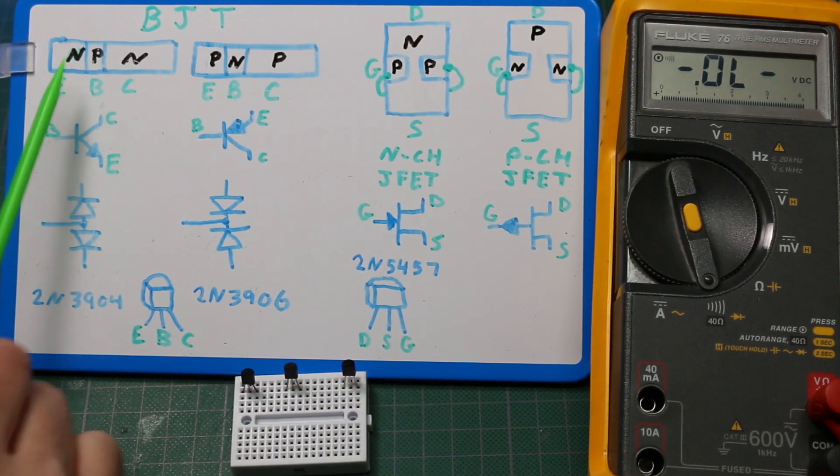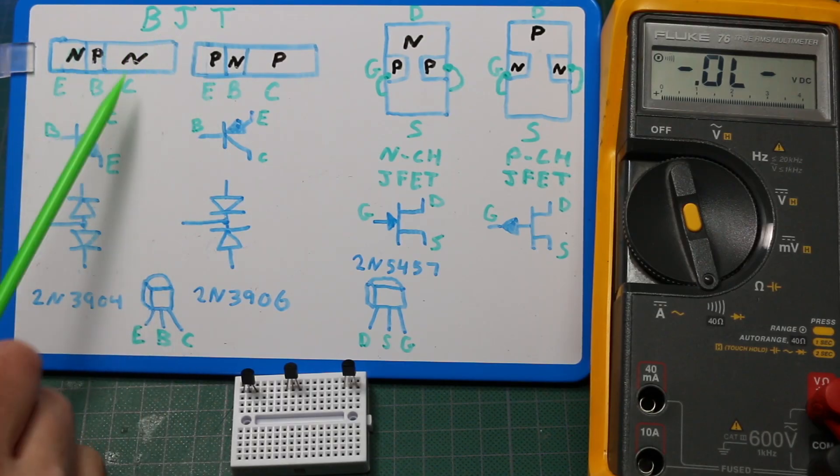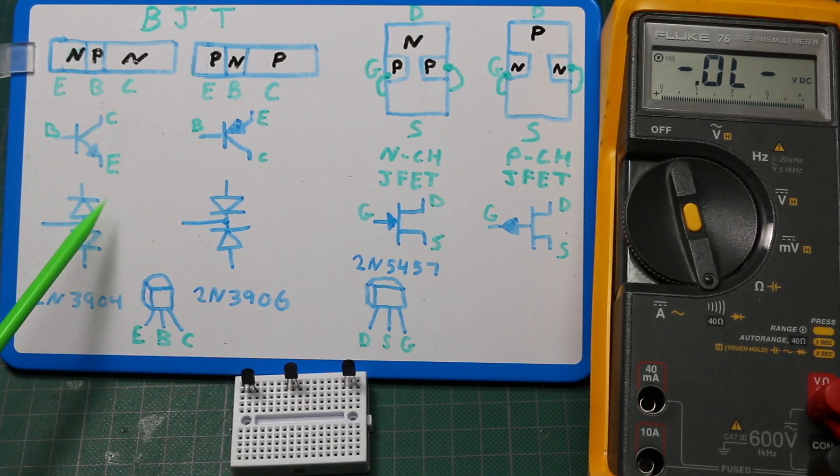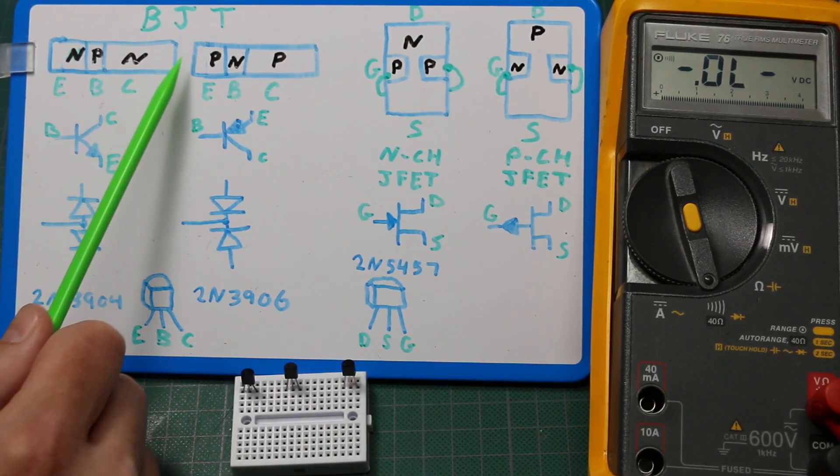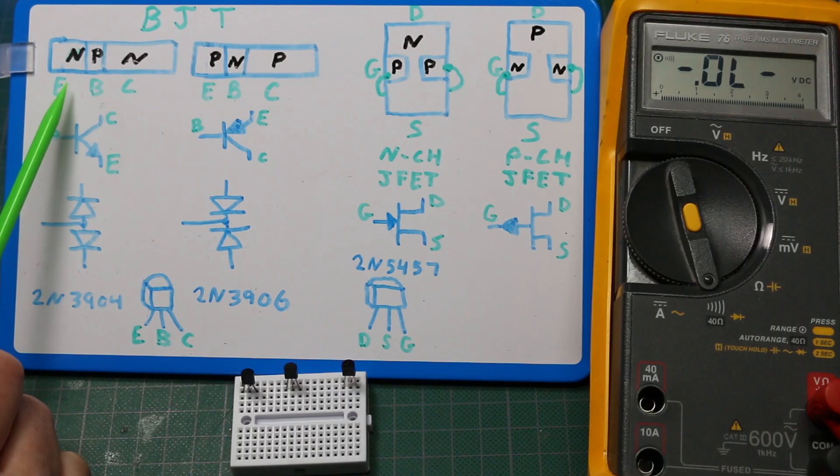We can use another characteristic of the BJT construction to actually determine now which of these are emitter and collector. The collector is physically larger material than the emitter, and the emitter is more heavily doped than the collector.